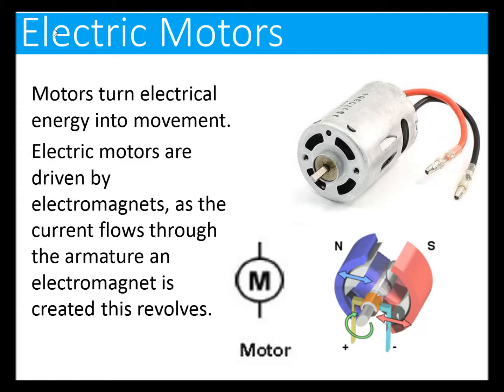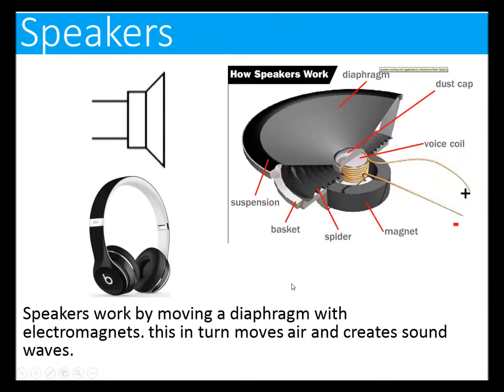Electric motors turn electrical energy into movement. Electric motors are driven by electromagnets, and as the current flows through them the armature revolves. What you need to know is the electric motor symbol. Speakers work by moving a diaphragm with electromagnets; this in turn moves air and creates sound.